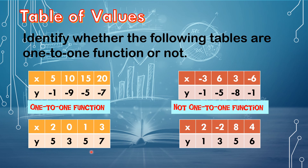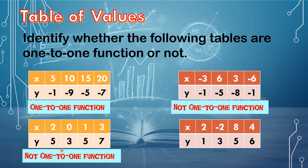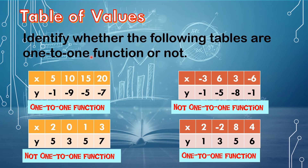For the third table, the x-values are 2, 0, 1, and 3 — no repetition. In the y-values: 5, 3, 5, and 7 — the value 5 is repeated. Therefore, this table is not a one-to-one function. For the last table, the x-values are 2, negative 2, 8, and 4 — no repetition of x-values. Therefore, this table is a one-to-one function.